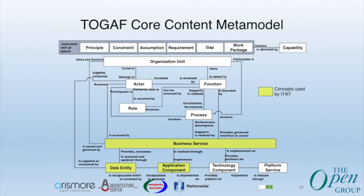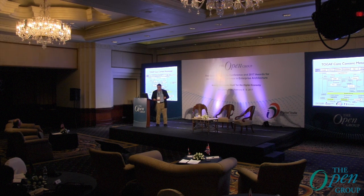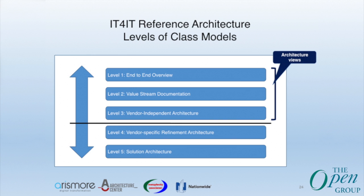This is the TOGAF Meta Model — a subject of great debate within the architecture forum as we re-engineer it for the next version of TOGAF. It shows the entities and their relationships. For example, actors are allowed to be part of an organization, and organizations are allowed to have functions and processes. As long as there's a line connecting these entities, that's a legal relationship that can exist. The IT4IT standard defines reference models at levels 1, 2, and 3, which the standard explicitly describes. Below level 3, it's reserved for vendors to do their magic.